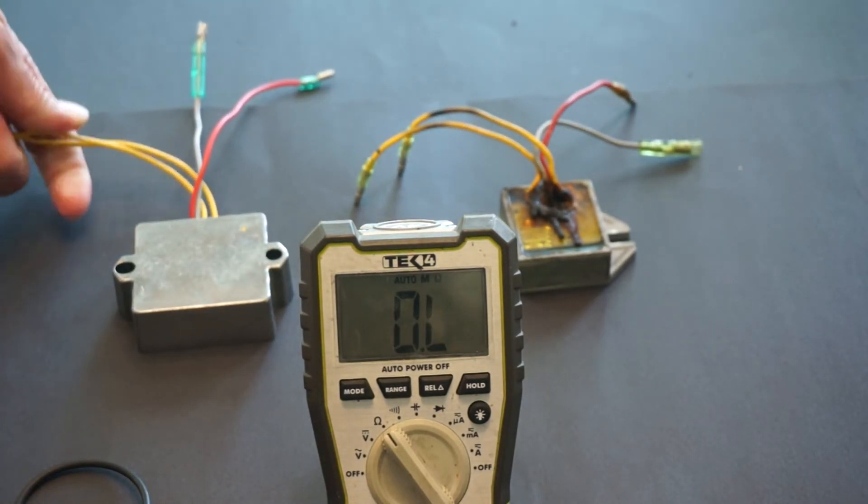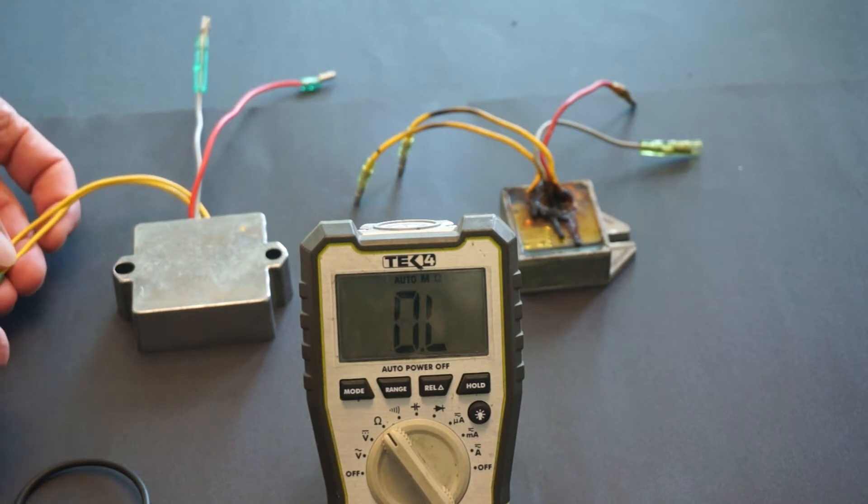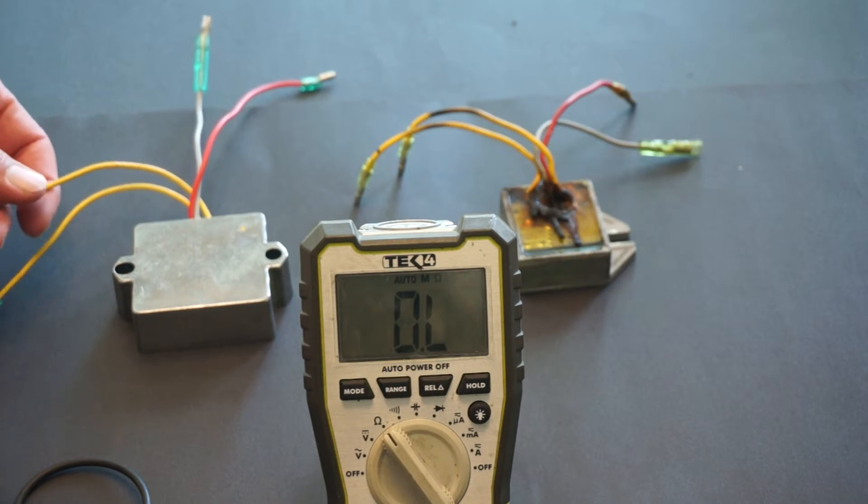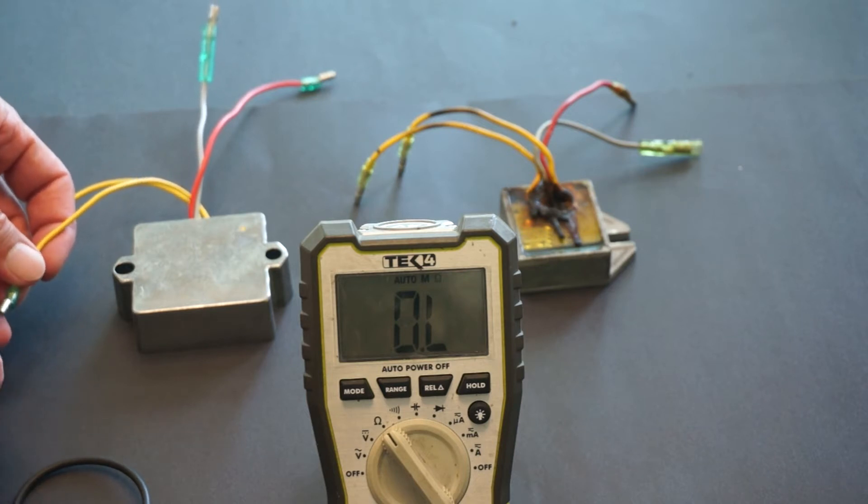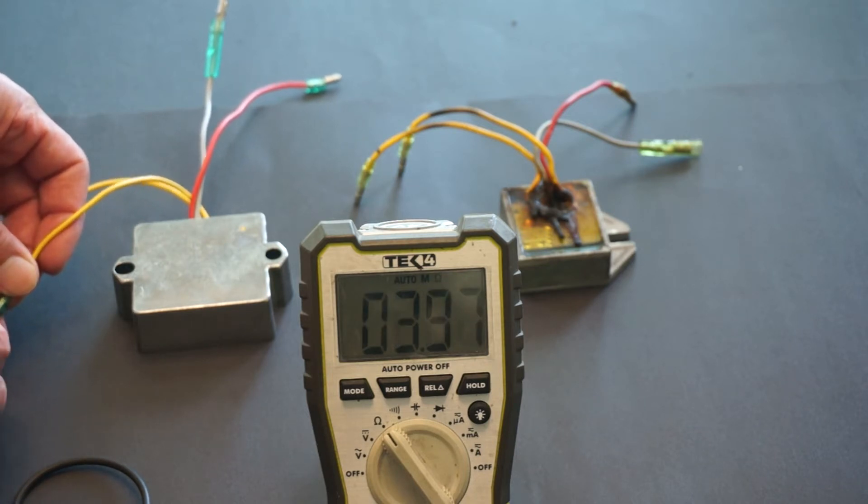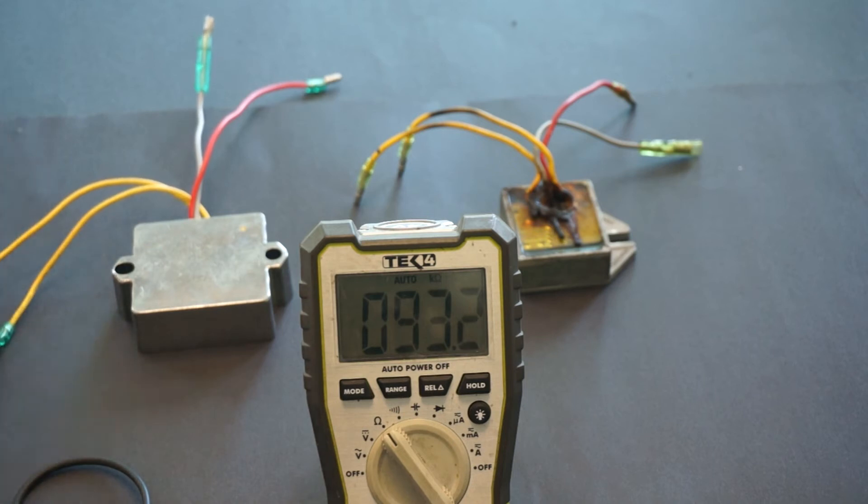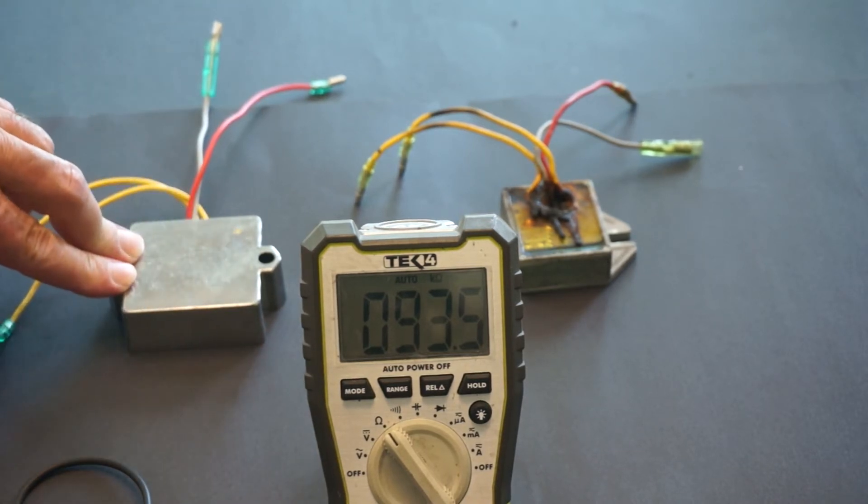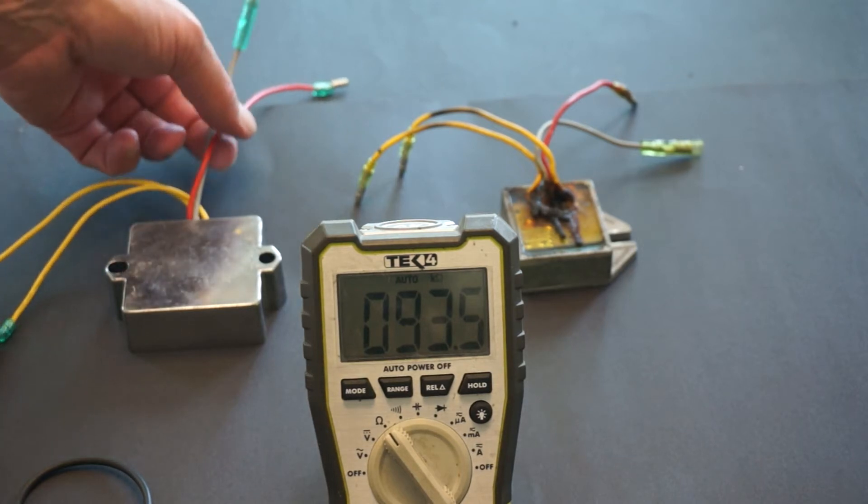The yellow wires on this particular one connect to the alternator, to the stator, and this is the high voltage coming from the alternator. It's about 200 to 300 volts AC and the job of the rectifier is to take that voltage and transform